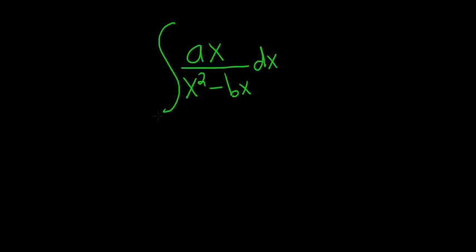Integrate ax over the quantity x squared minus bx. Solution: So when you first see this problem, lots of things probably come to mind. Maybe making a U substitution comes to mind.